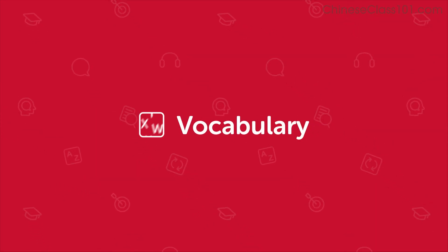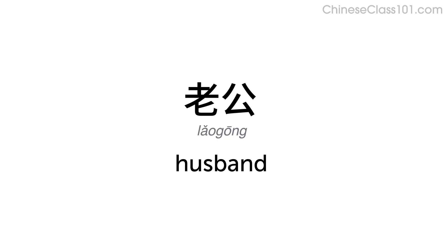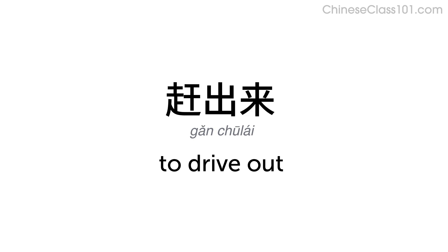Now you'll hear the key vocabulary followed by the English translation. 老公 — Husband. 赶出来 — To drive out.